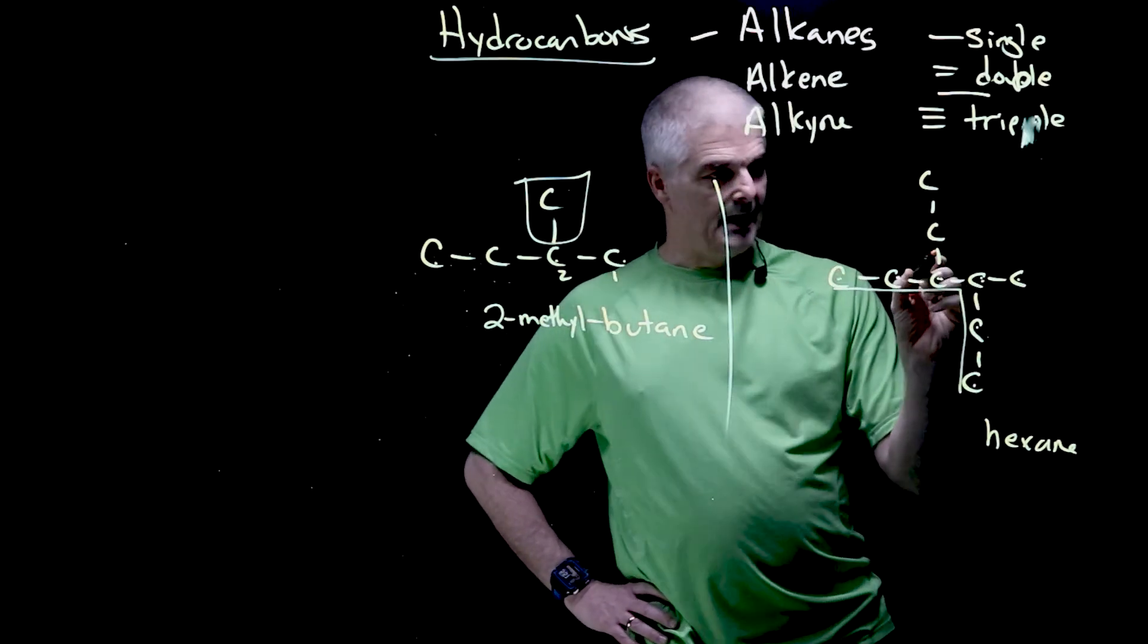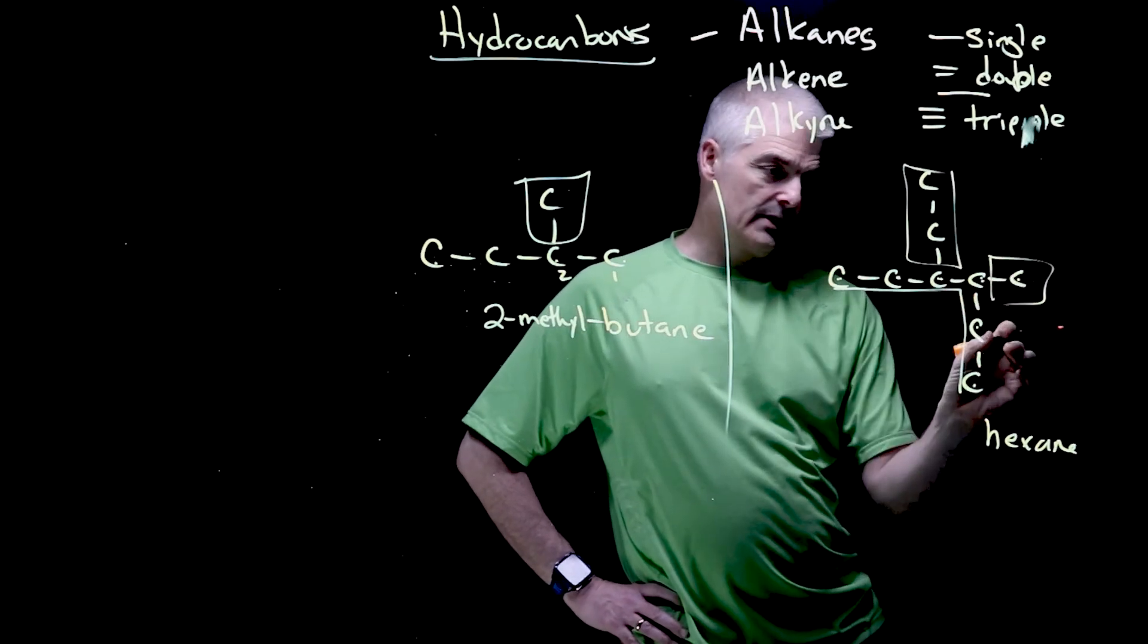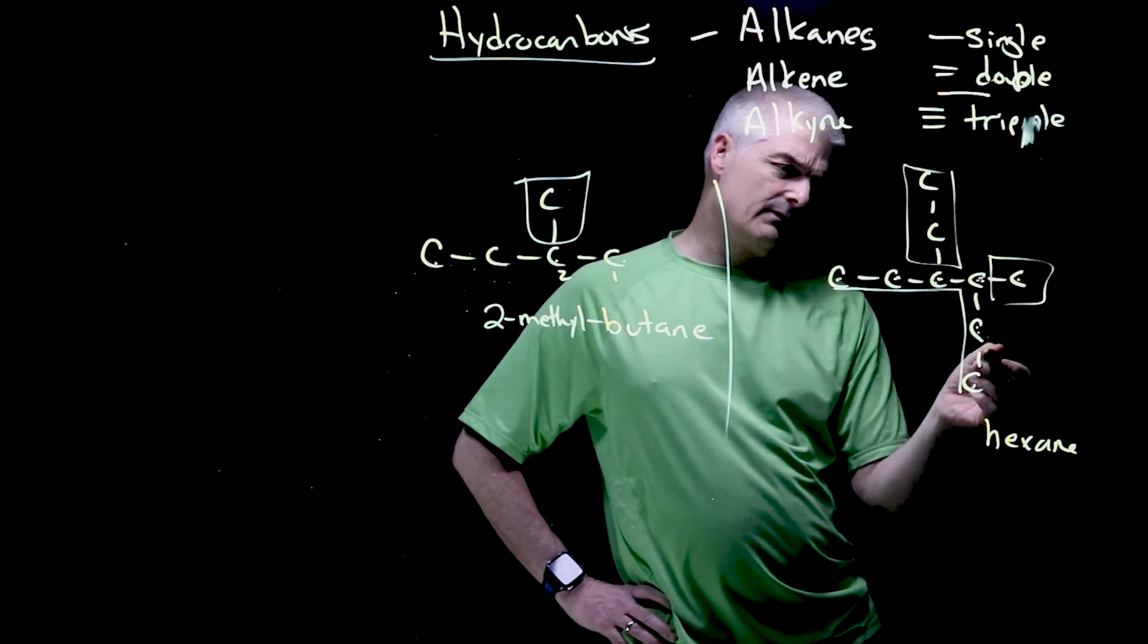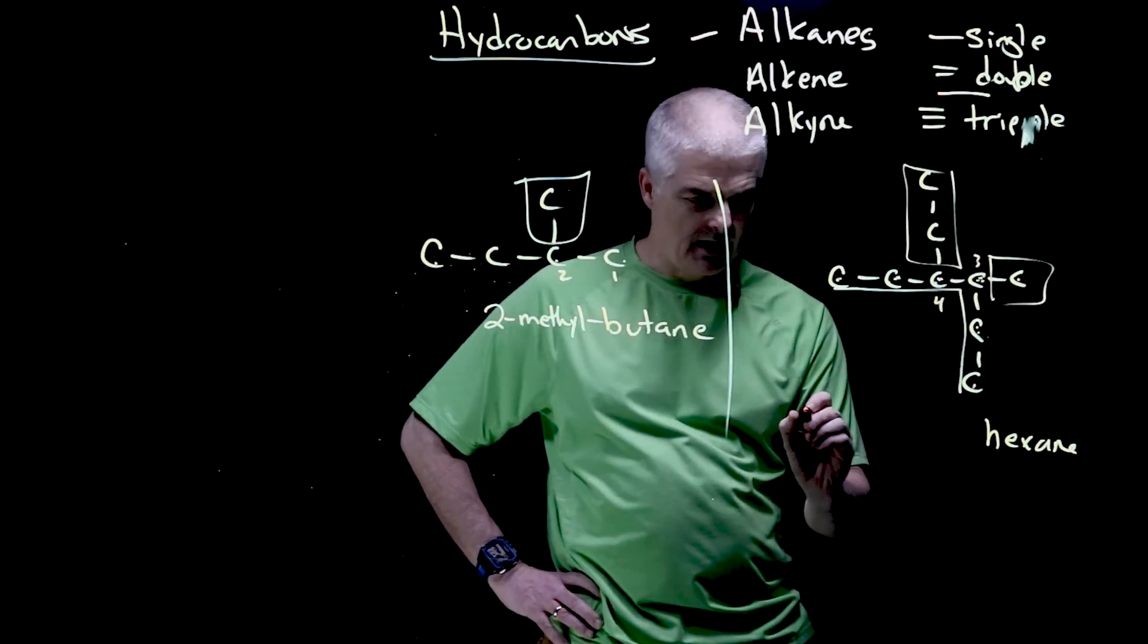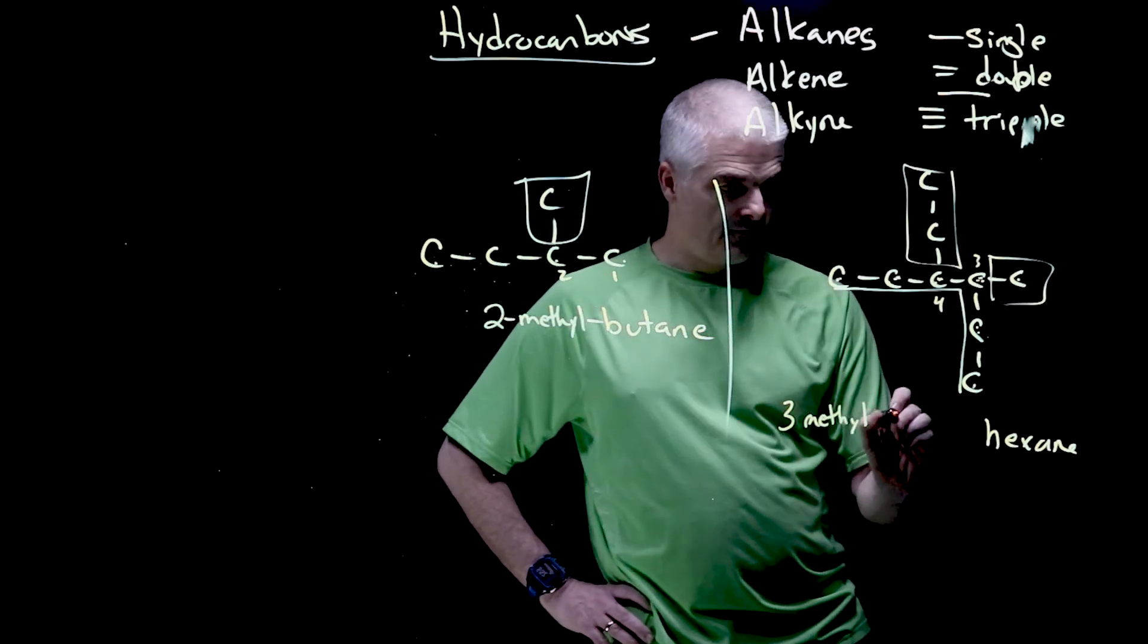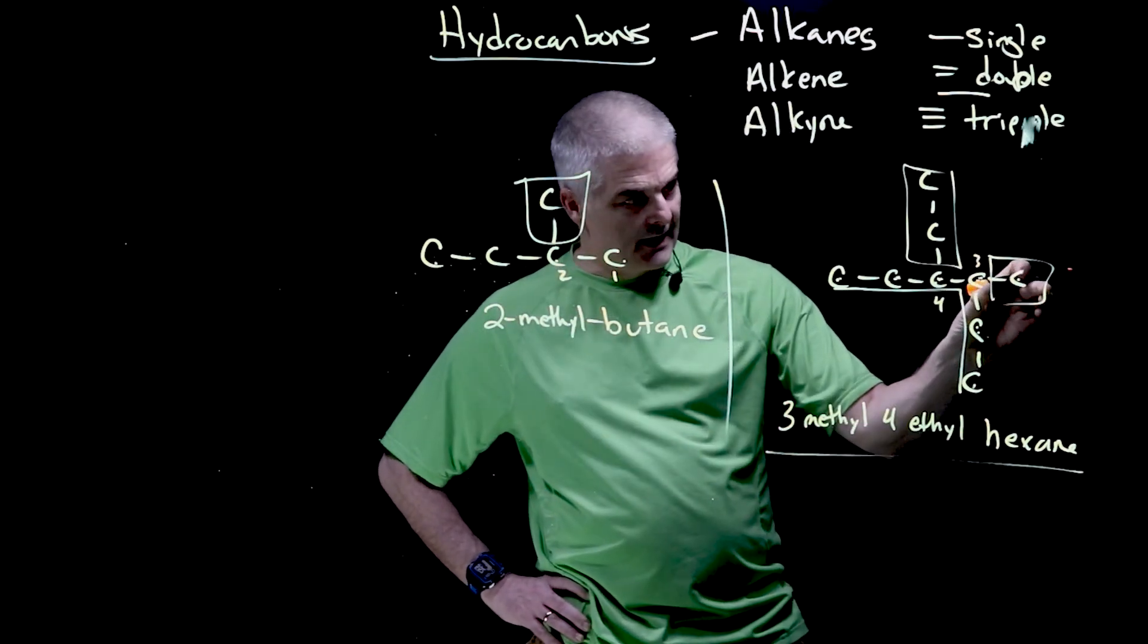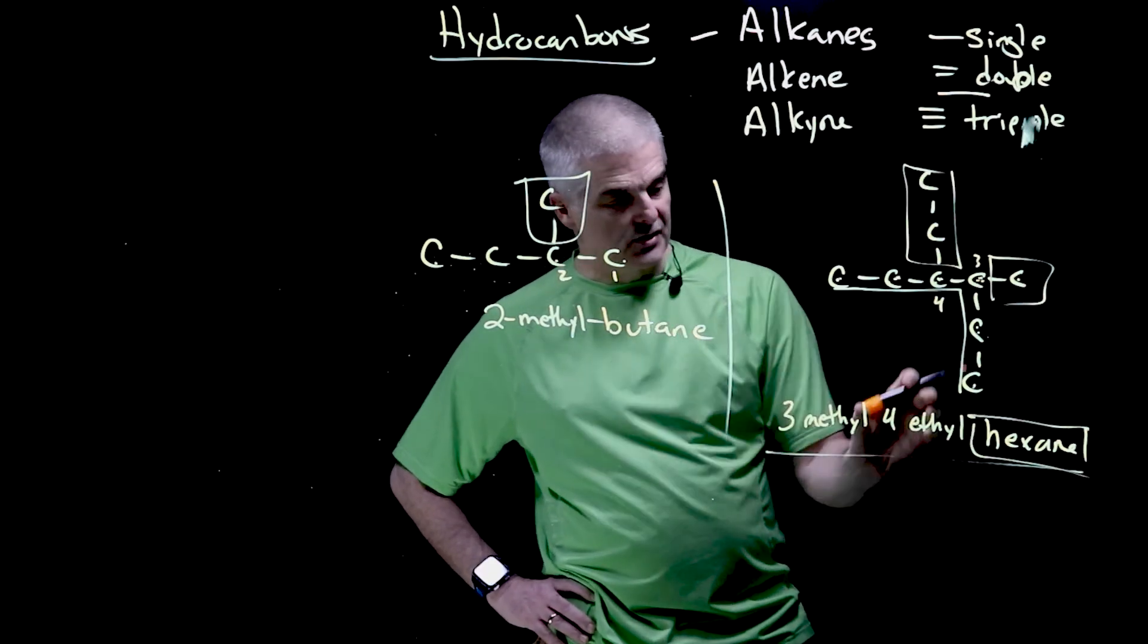Now I've got a branch here and a branch here. This is a one carbon branch. I'm going to get the numbers with the lowest. So one, two, three, four, five, six, or one, two, three. They're both three, four. So I think I'd count here. So I'll call this a three and this is my four carbon. So I would say three methyl, four ethyl hexane. Make sense? So I identify the branches. Actually, I do the last name first, so to speak. And then I identify the branches and where you find them.